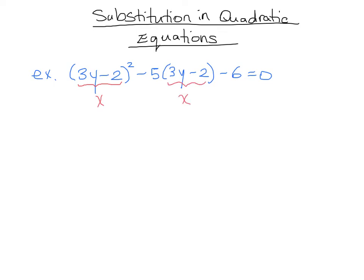So what we now end up having is x squared minus 5x minus 6 is equal to 0. All I did was I took x and replaced it for 3y minus 2, like a substitution. Actually, it is a substitution. Now that we have that done, this looks a lot more manageable, so we can factor and solve this equation here.